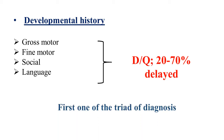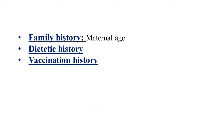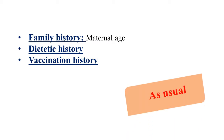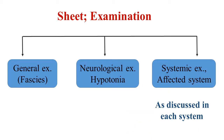Developmental history is the first item in the diagnostic triad. Dietary and vaccination history are standard. In the family history, the most important item is the maternal age during pregnancy.